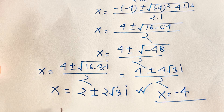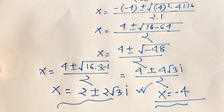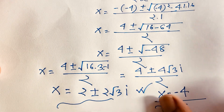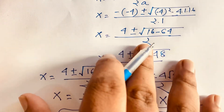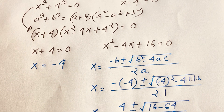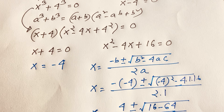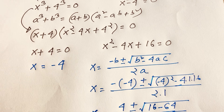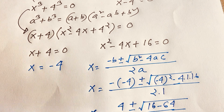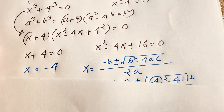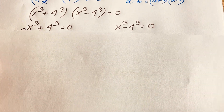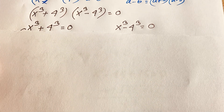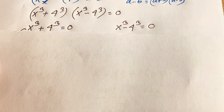We've found 3 answers so far, but our target is 6 answers because this is an equation in x to the power 6, so we expect 6 roots. Now for our other case: x to the power 3 minus 4 to the power 3 equals 0.